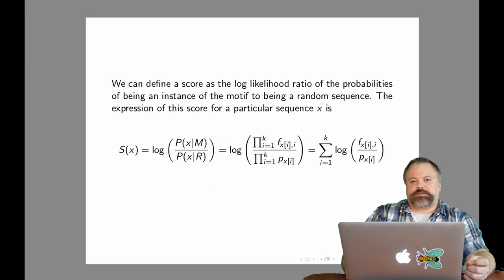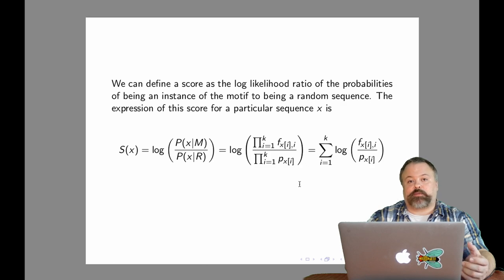Now the weight matrix score is essentially a log likelihood ratio. S of X is equal to the log likelihood ratio of the probability of X given the motif model divided by the probability of X given the random model. If we replace these probabilities with our previously defined product formulas, the product over these single nucleotide or position-dependent frequencies, we recognize that the log of a product is equal to the sum of the logs. And we can write down our formula of S of X like this.